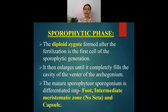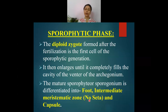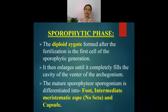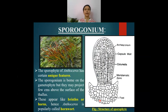The mature sporophyte or sporogonium of Anthoceros is very peculiar. It is differentiated into: foot, an intermediate meristematic zone, and capsule. This intermediate meristematic zone is a very peculiar character of the Anthoceros sporogonium — it completely replaces the seta. Unlike Marchantia where there is a foot, a seta, and a capsule, in Anthoceros the seta is completely replaced by this intermediate meristematic zone.